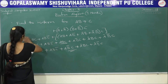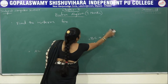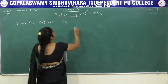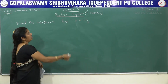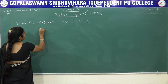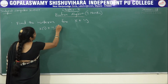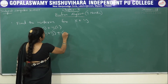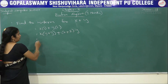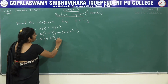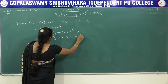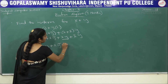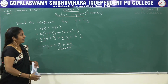One more problem: find the minterm for x + y. Here y is missing from x, and x is missing from y. So write x·(y + ȳ) + (x + x̄)·y = xy + xȳ + xy + x̄y. Removing the duplicate xy, the minterm expression is: xy + xȳ + x̄y. This is the minterm in sum of product format.